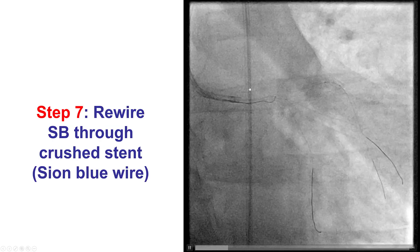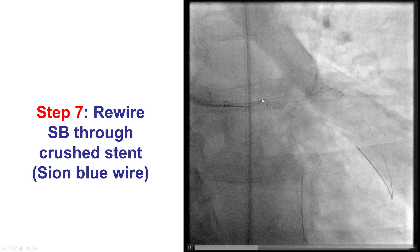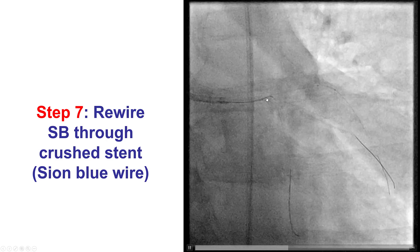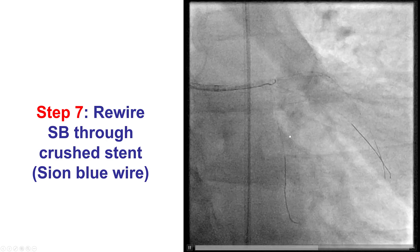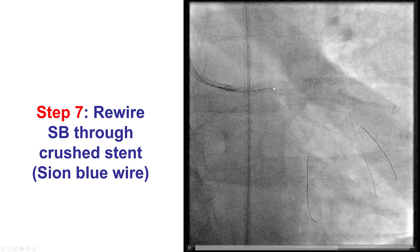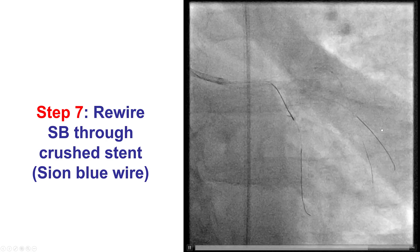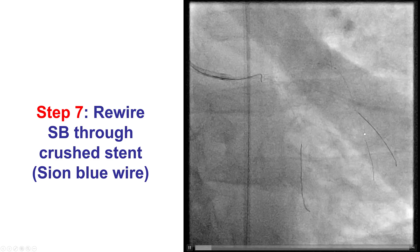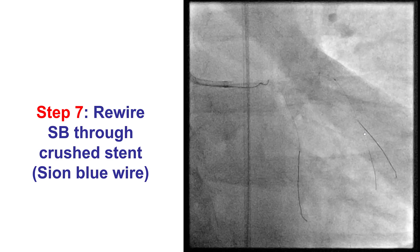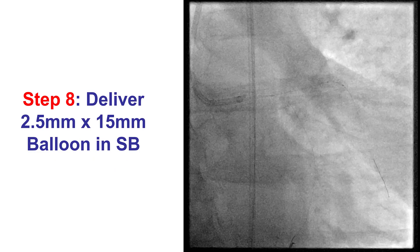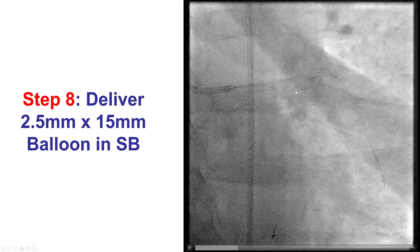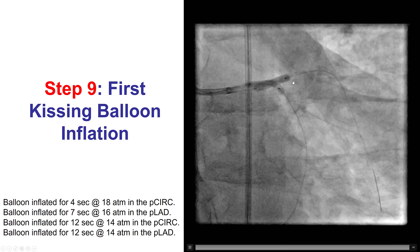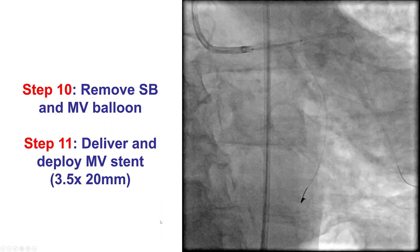We rewired the circumflex through the crush stent using a workhorse guide wire, and although there was some difficulty, we were able to advance the guide wire into the circumflex. We decided not to also wire the obtuse marginal branch for simplicity, since we had confirmed flow through it using ultrasound and chromoflow. We then delivered balloons into the LAD as well as the circumflex and performed the first kissing balloon inflation — a two-step kiss with high pressure into the circumflex side branch, then together at lower pressure, 14 atmospheres.